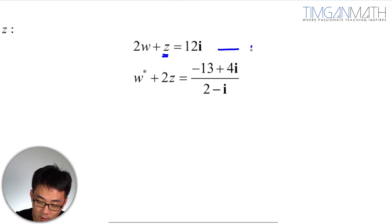So from this case, from equation 1, we know that Z is equal to 12i minus 2W.